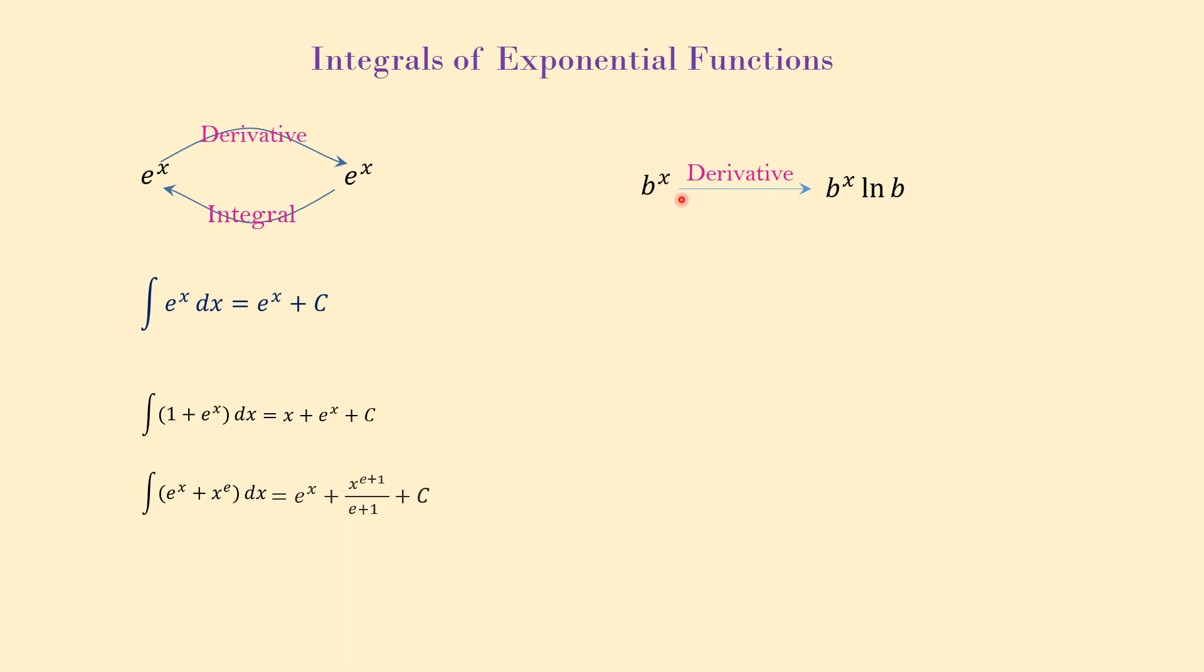If you remember from derivative, derivative of b to the x is b to the x ln of b. And because integral is the opposite of derivative, integral of b to the x dx will be b to the x over ln of b plus c. Opposite of derivative. In derivative of b to the x is b to the x times ln of b, but here we are doing the opposite, integral.